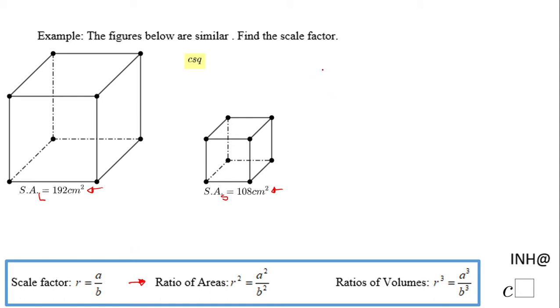If you notice, that is called r squared. In this case, r squared can be written as surface area of the larger figure over surface area of the smaller figure. Of course, you can write this ratio of areas the other way, small over large, but I think it's better to go large over small. We have here 192 over 108.